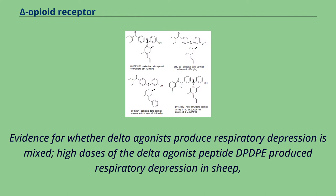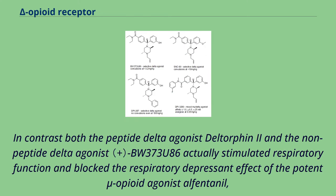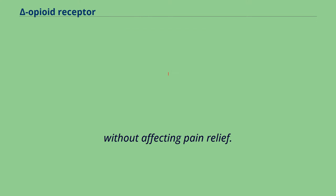Evidence for whether Delta agonists produce respiratory depression is mixed. High doses of the Delta agonist peptide produced respiratory depression in sheep, but in tests on mice the non-peptide Delta agonist SNC80 produced respiratory depression only at the very high dose of 40 mg/kg. In contrast, both the peptide Delta agonist Deltorphin-2 and the non-peptide Delta agonist B.W. 373U86 actually stimulated respiratory function and blocked the respiratory depressant effect of the potent Mu Opioid agonist L-Fentanyl, without affecting pain relief.